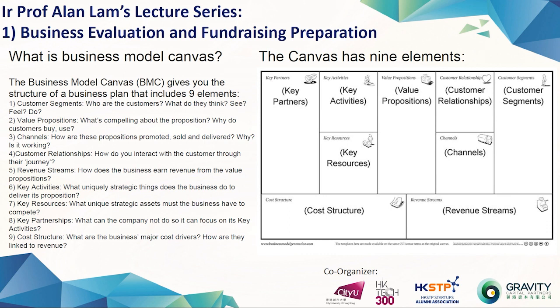Through this exercise, at the bottom is the revenue stream — how can you charge them? You know who they are, how to reach them, how to build the relationship to let them pay you, and then you know how to gain the revenue. That is the right hand side — the demand circle.